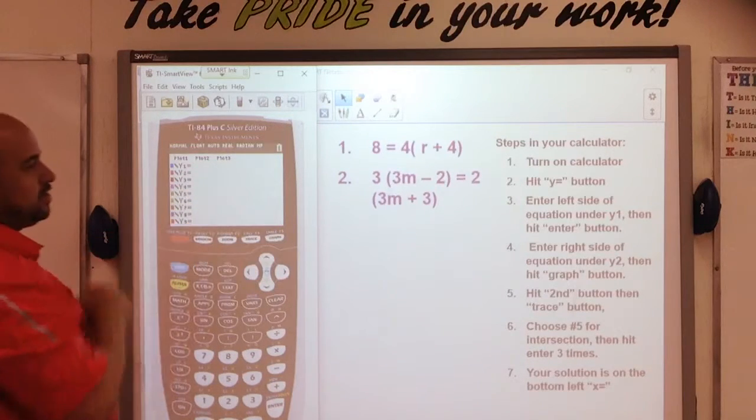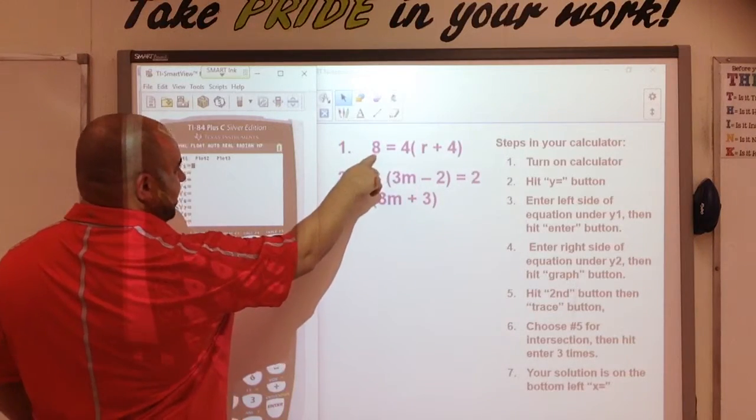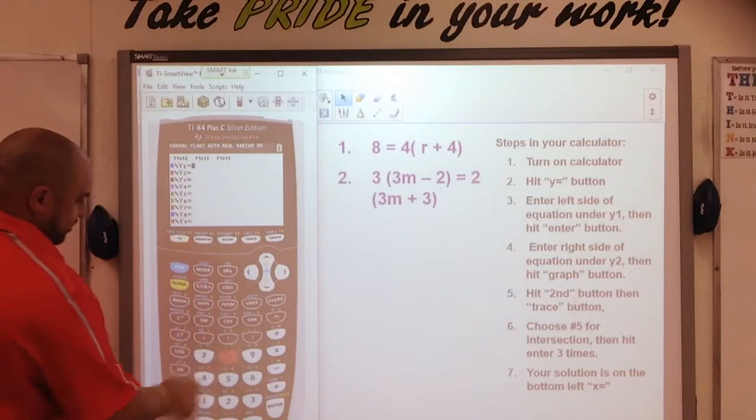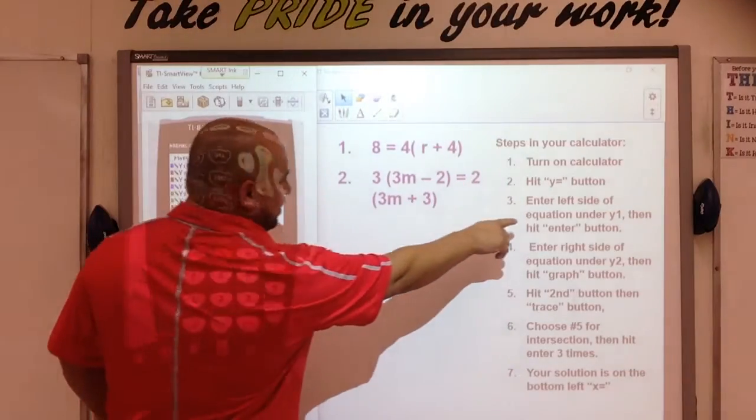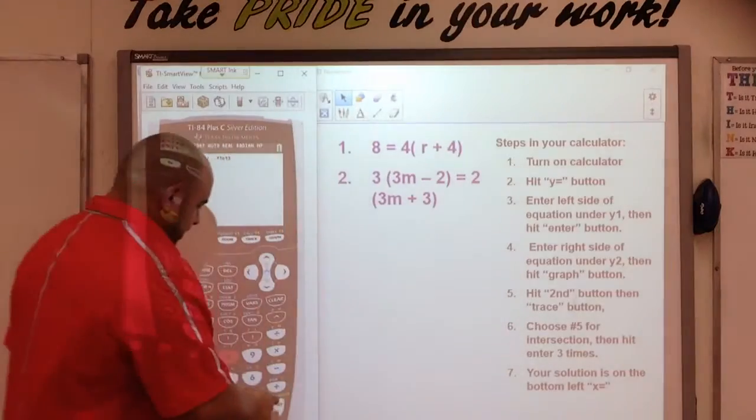Step number three, you're going to enter the left side of the equation under y1. Well, for number one, the left side of the equation is just 8. So, I hit 8. And then after that, I'm going to hit the enter button. So, right now, I'm doing step number three. So, I hit enter.